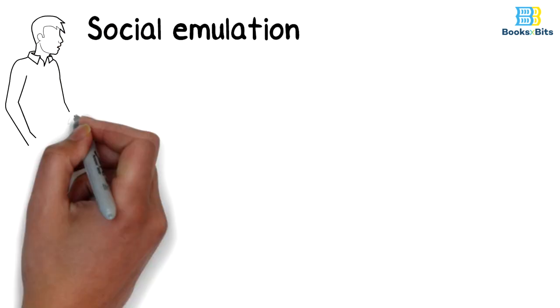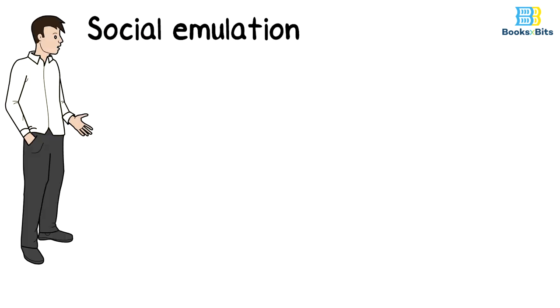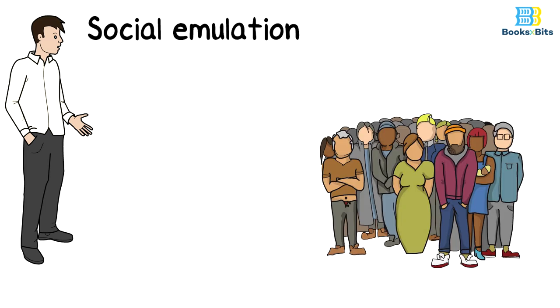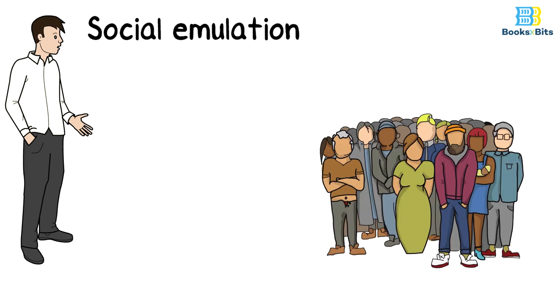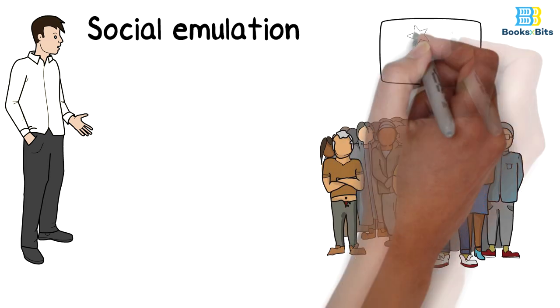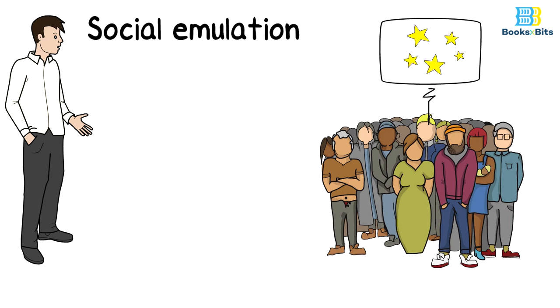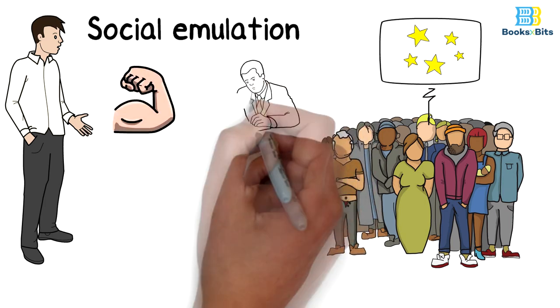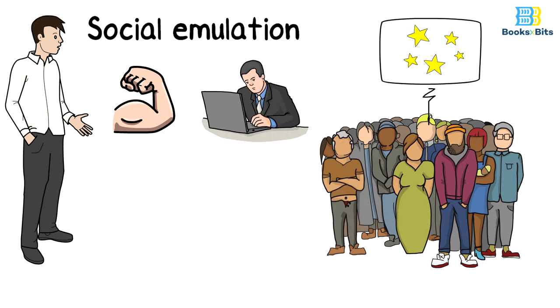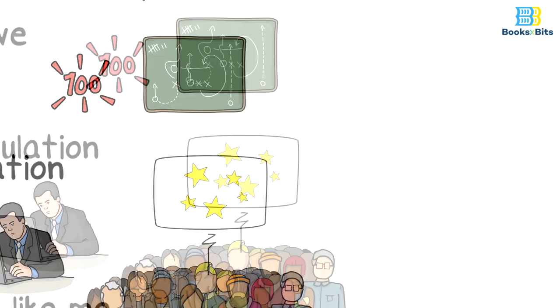Social emulation. To use social emulation and persuasion, share with him as many people as possible who are similar to the person you are persuading, but describe them by being special because they look like him. This gives people a great deal of courage to do something they might not have done before. The point is not that everyone does this, but it is that everyone like me does this.